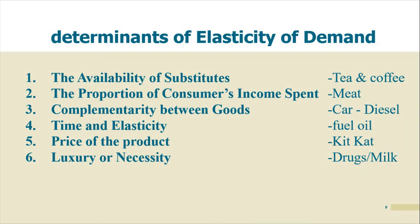Third determinant is complementarity between two goods. For example, cars and diesel — if the price of diesel is increasing, the quantity demanded for cars will decrease because people think diesel is too expensive to sustain. Fourth is time — if the price of a particular fuel like OPC increases significantly, in the short run you can't stop buying petrol, but in the long run you will reduce your fuel consumption.